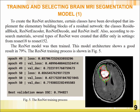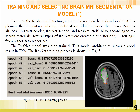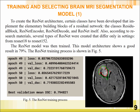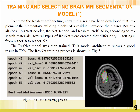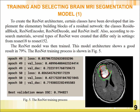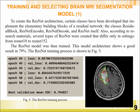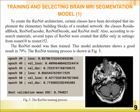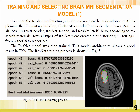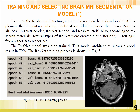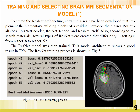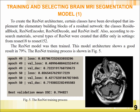Also, according to research materials, several types of ResNet were created that differ only in settings, from ResNet-19 to ResNet-152. The ResNet model was trained, and this model architecture shows a good result of 79%. The ResNet training process is shown in Figure 5.